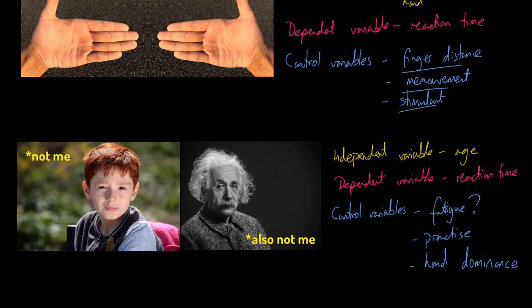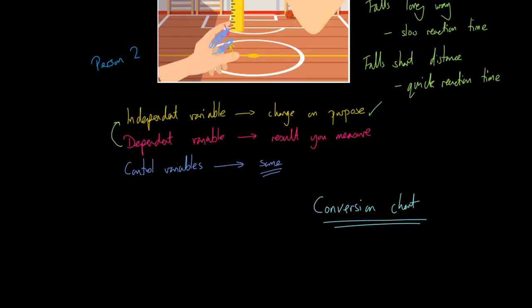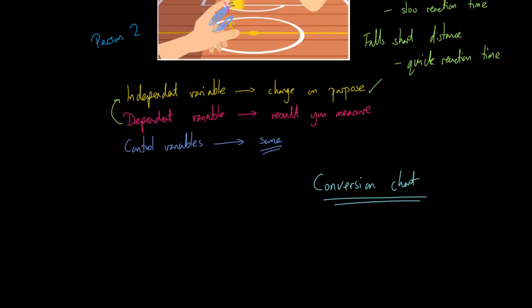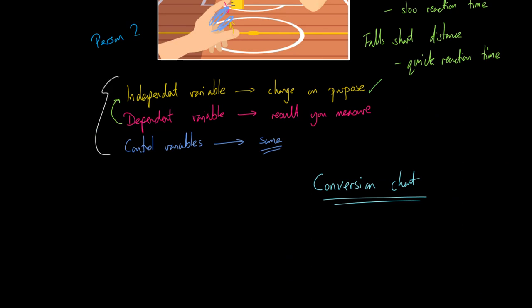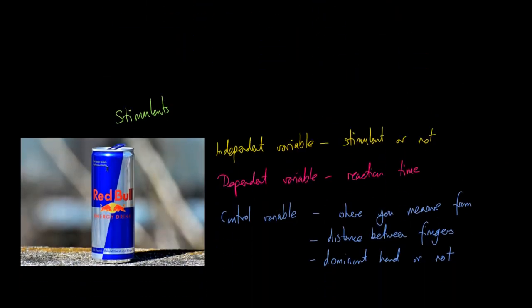Take home message then: it's a pretty straightforward experiment to do, but the key to this, the key to doing this successfully, is the variables. Because if you manage to set up your experiment and control all the variables that you need to, then you'll have a good set of results to compare.